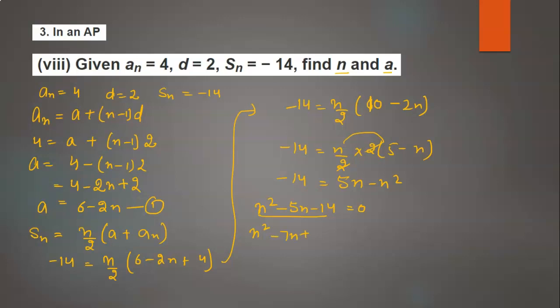n² - 7n + 2n - 14 = 0, because 7×2 is 14 and -7 + 2 is -5. Take n common with -7 here, plus 2 common, so (n - 7)(n + 2) = 0.